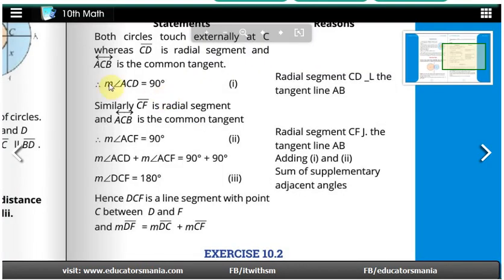Since this is a tangent, angle ACD equals 90 degrees as radial segment CD is perpendicular to the tangent line AB. Similarly, angle ACF equals 90 degrees because radial segment CF is perpendicular to the tangent line AB.